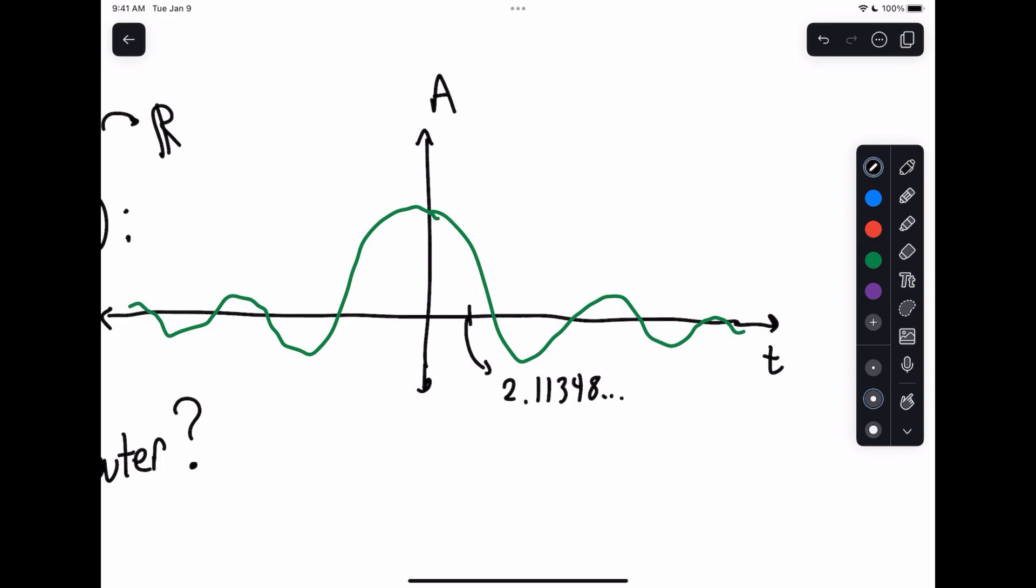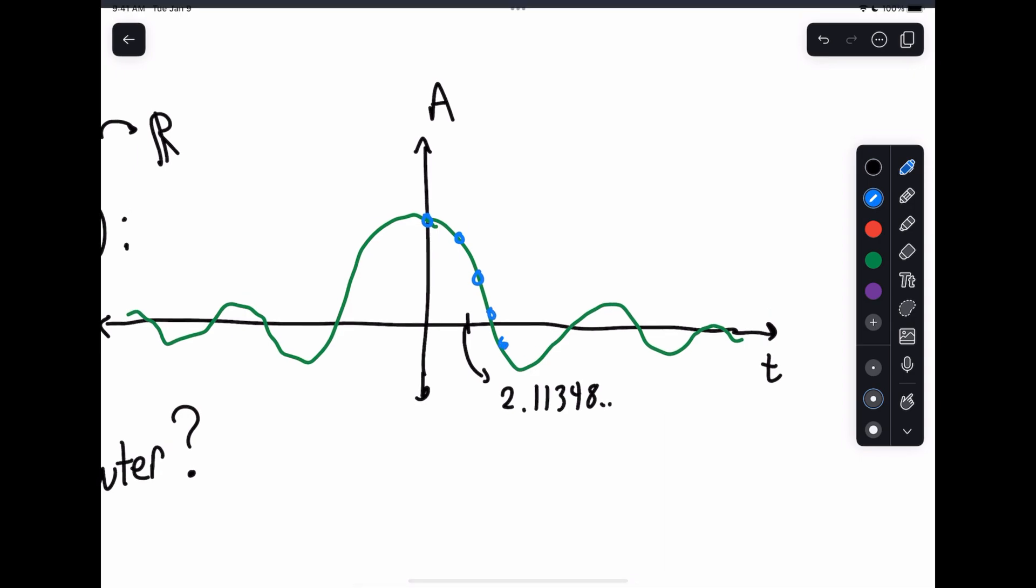One way to do this is to basically sample it or approximate it with samples. What I can do is just pick these points and hope that I get enough samples that I can approximate my signal well enough. I can define the distance between these points as my sampling period TS, which is related to the sampling frequency, FS. TS is like the time between samples and FS is like the rate at which samples are taken.